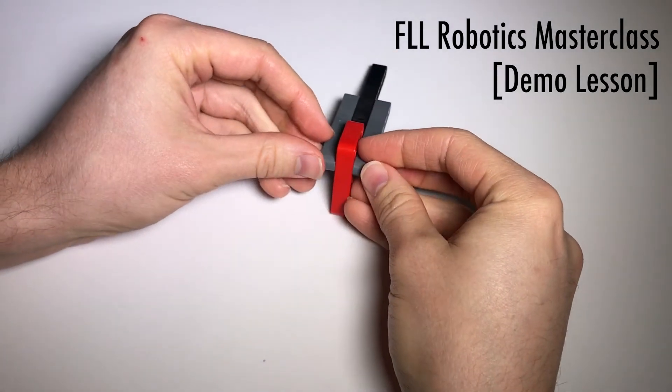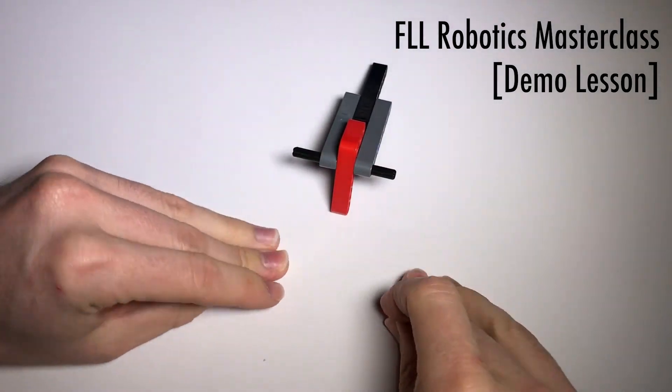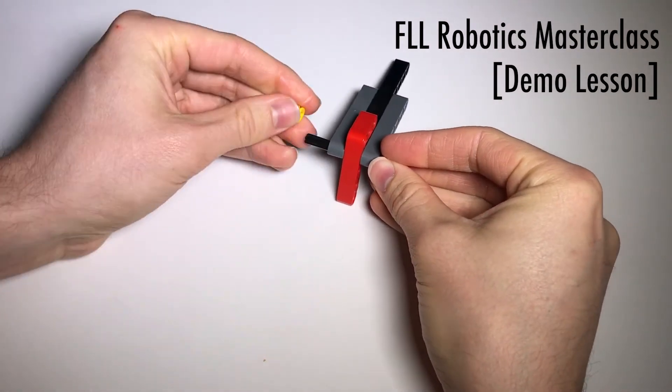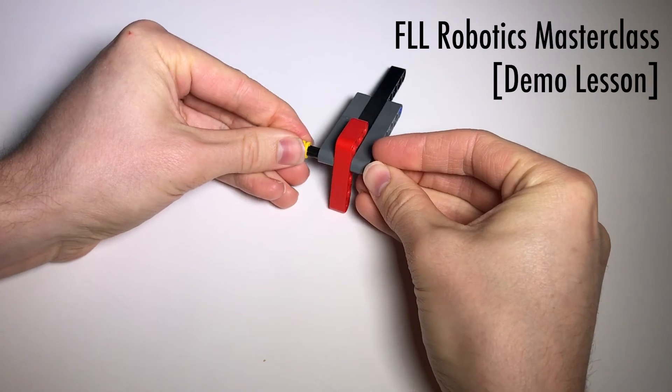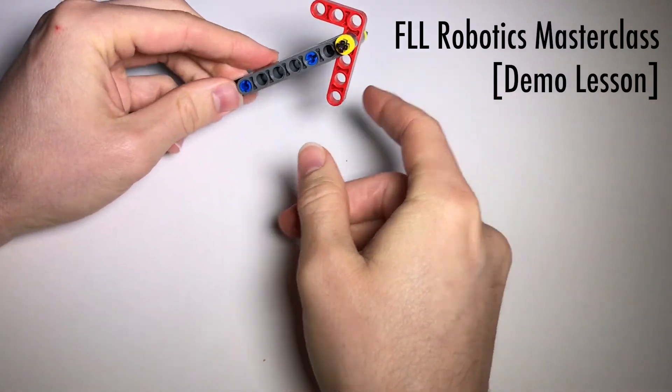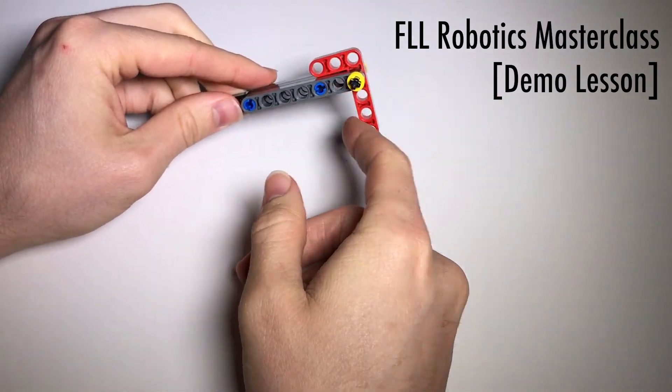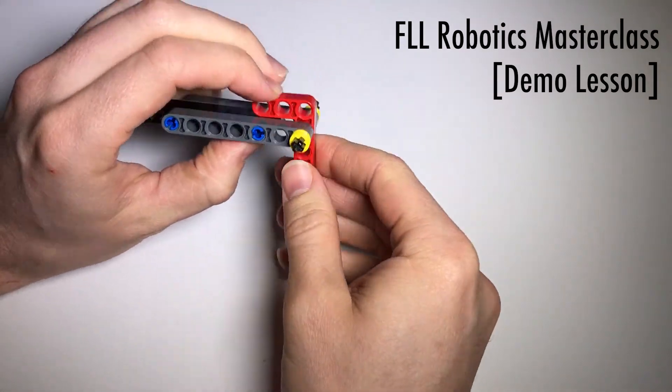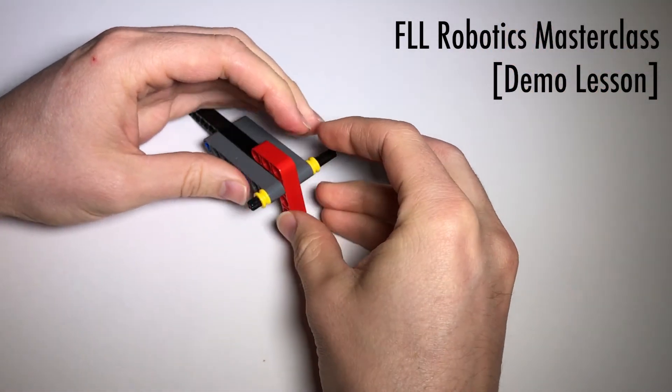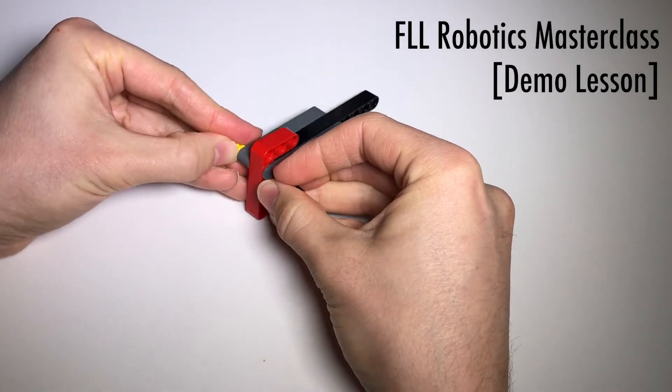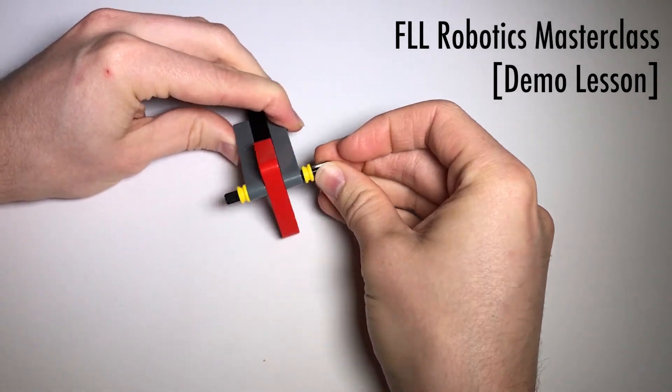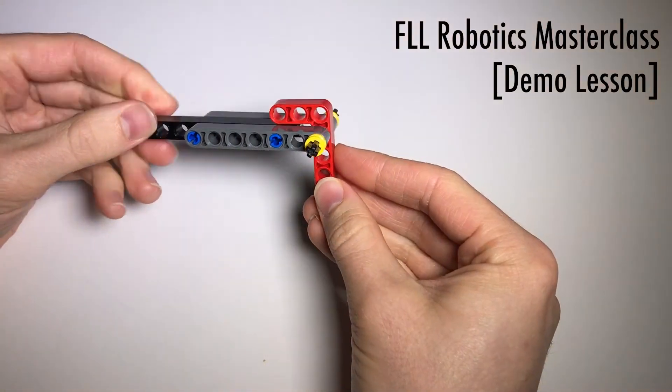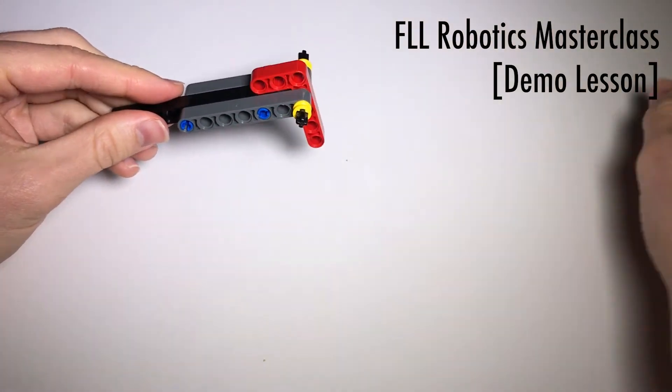And then so that it doesn't all fall apart every five seconds, we will get some bushings and add bushings to either side. Now, one of the tricks with this is to not let it get too tight, because if it's too tight then this will get stuck. And that's actually why a lot of teams will add a rubber band right here to sort of pull it together, but I'll demonstrate that later. So right now I'm just going to make sure this is sufficiently loose so that this can move freely. And we have our one-way door.